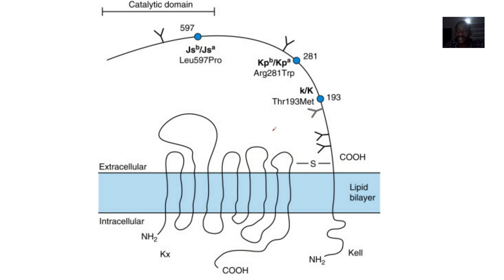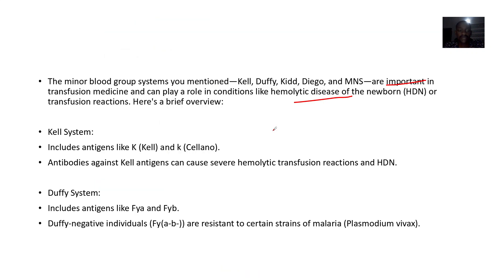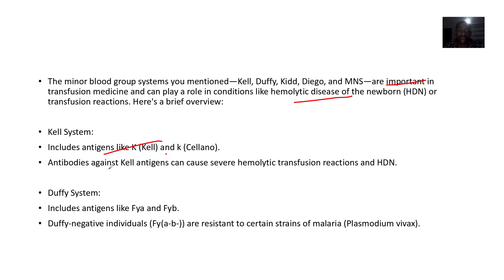The Kell system involves antigens like K, which is Kell — written with a capital K — and small letter k, which is known as Cellano. So you have capital K and small letter k as the main antigens in this system.